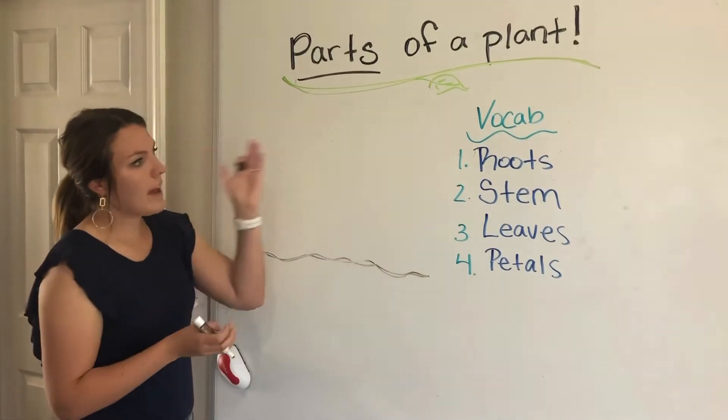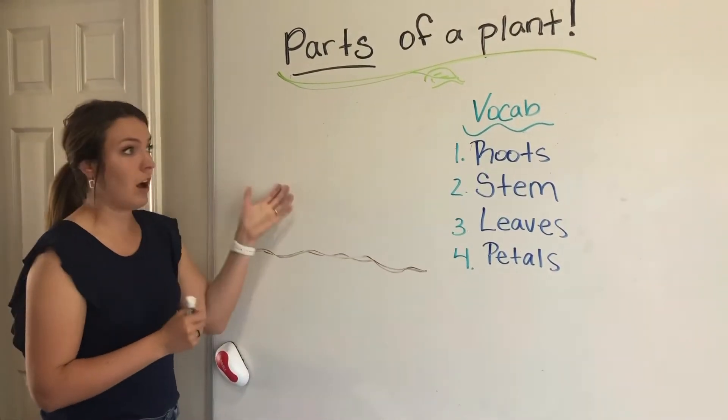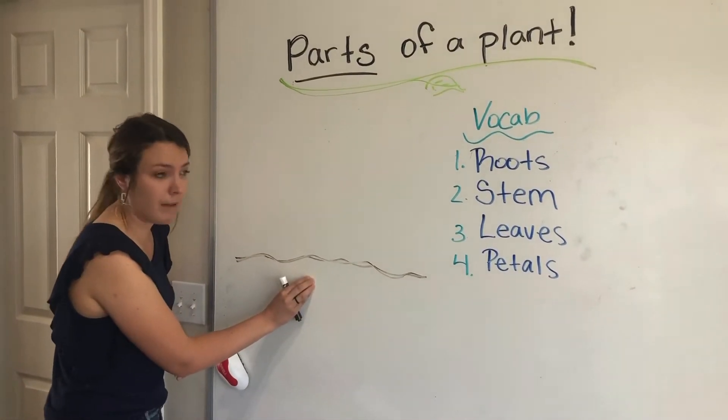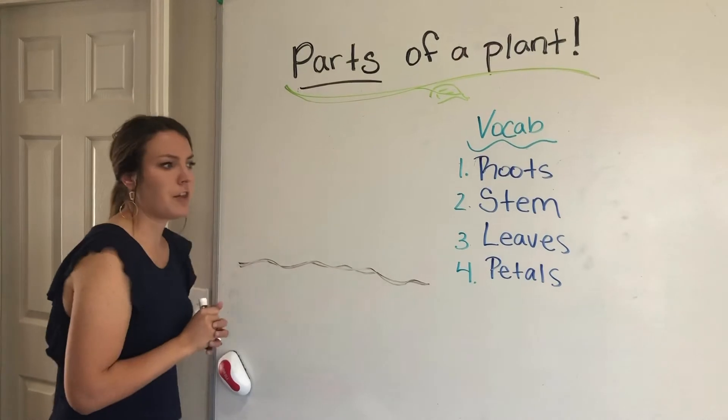Okay, we have four vocabulary terms that we're gonna be learning today while we're drawing our plant. So if you were to think about the one thing that grows down here to keep the plant from falling, which one do you think it is?